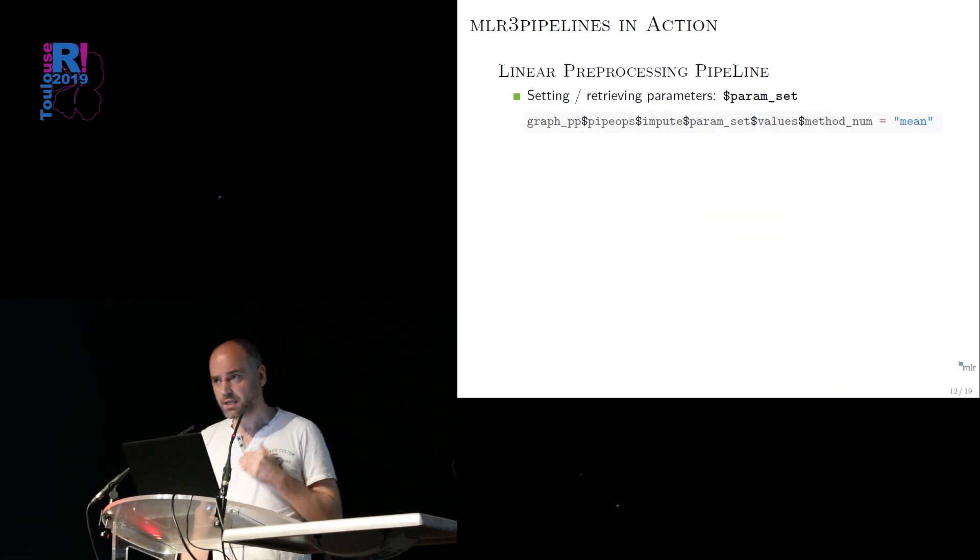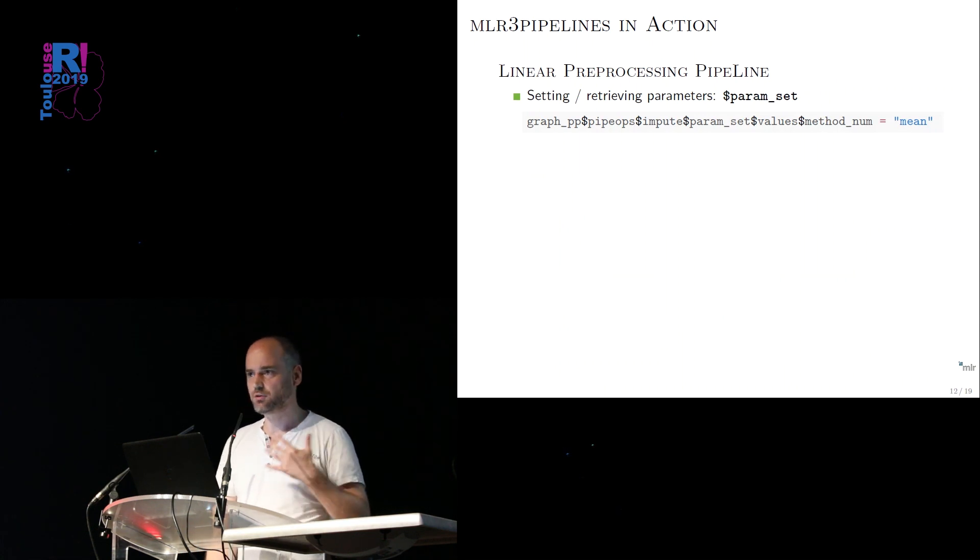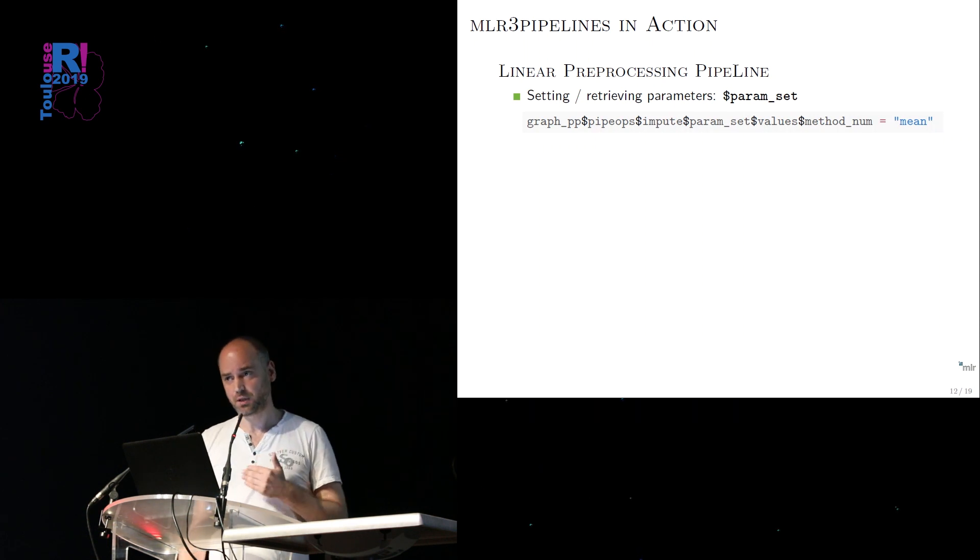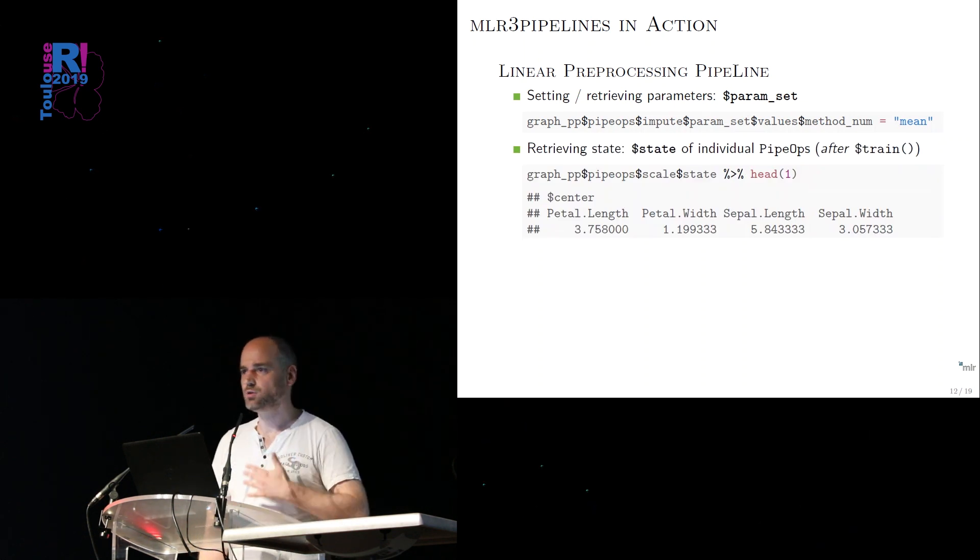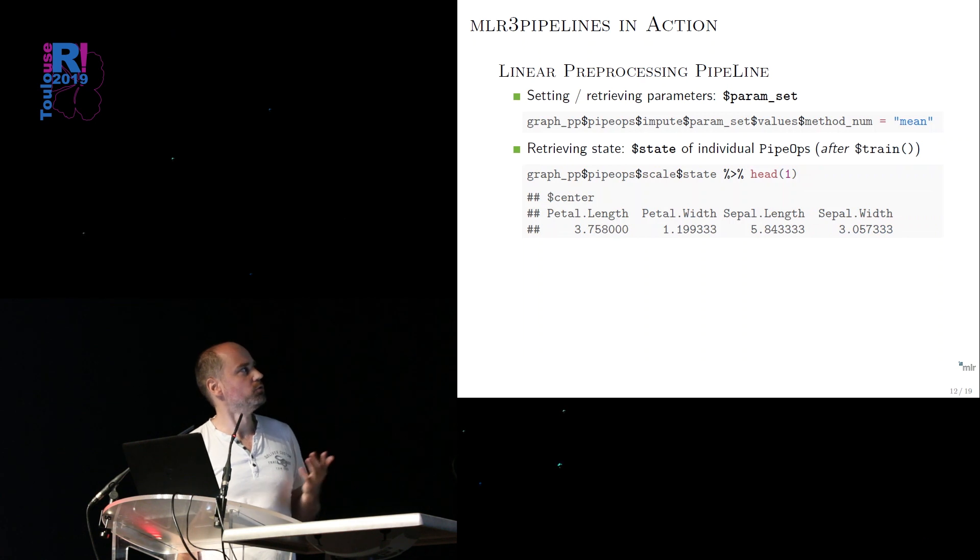You can also easily access all of the various states, member variables of these pipe operators. I think the most important ones we have put here on that slide. So there's, of course, hyperparameters. Each pipe op has a set of parameters that you can set. And as the whole graph basically feels like a list, you just access the list here with the ID of the pipe operator. And then you can access all of the member variables. So in this instance here, we are setting certain hyperparameters to a certain value. You can also query that. Very easy. You can also, of course, retrieve the state. So maybe you want to just figure out what rotation matrix the PCA operator has learned. So you access the state. You print it out. You look at it. Or you do something with it.